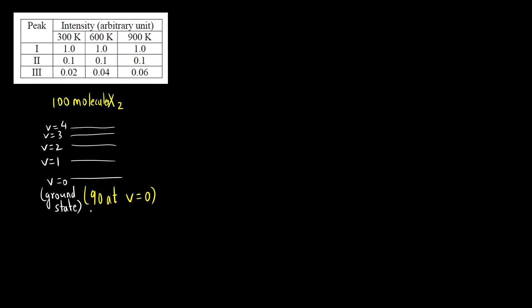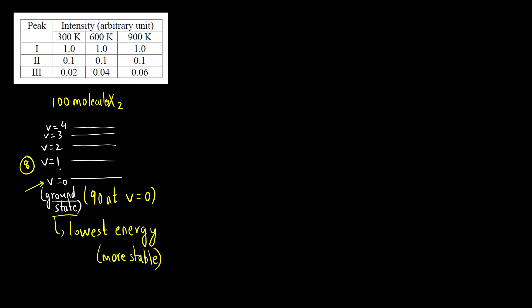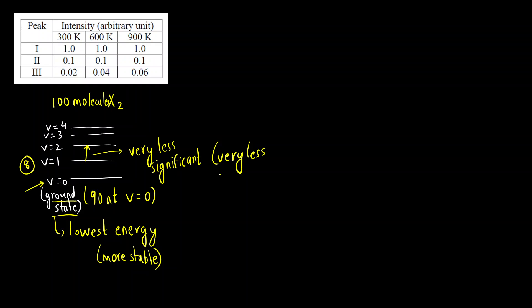Most of the population occupies the ground state because it is of lowest energy — energy is lowest means it is most stable. So if there are 100 molecules of X2, 90 molecules are present at V=0. Only 8 molecules are at V=1, so the transition from V=1 to V=2 is very less intense because very few molecules can be excited from V=1 to V=2.